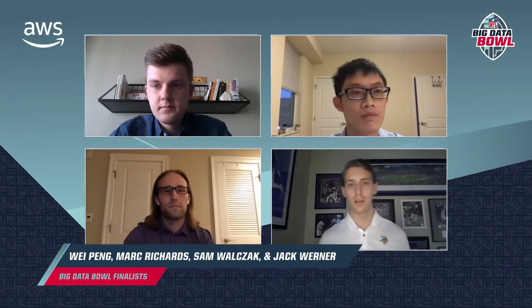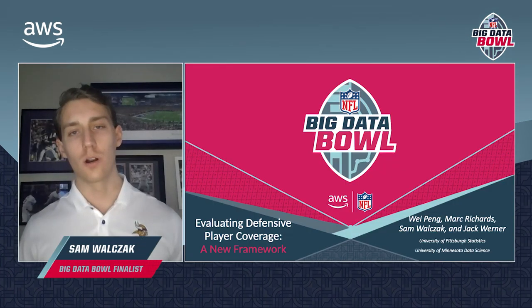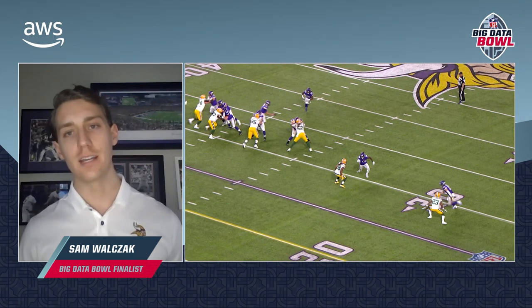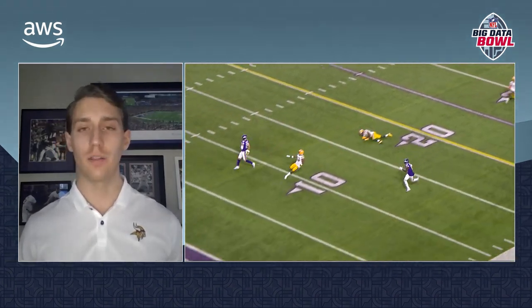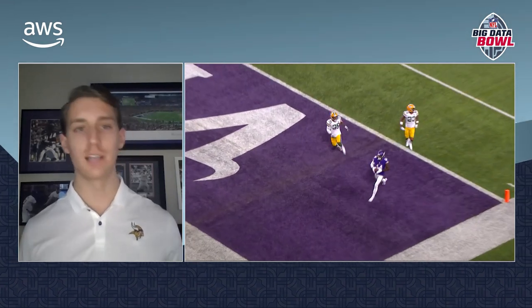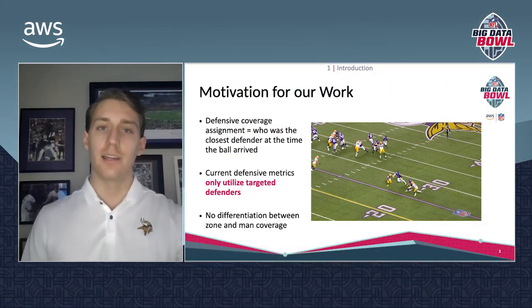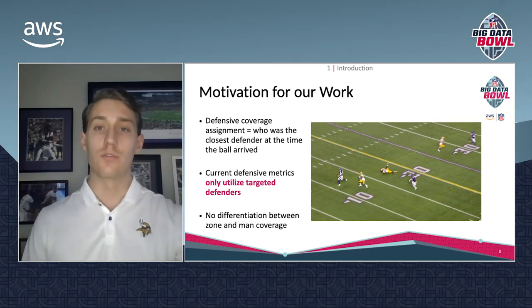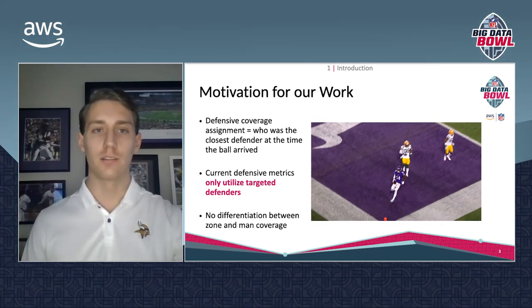We're here to present our framework for evaluating defensive player coverage. As a motivating example for our work, see this play where Stephon Diggs is covered by Tremont Williams, who falls down in the middle of the play and is nowhere near Diggs when he eventually catches the touchdown. This play illustrates some of the issues we see with the traditional ways of evaluating defensive back performance.